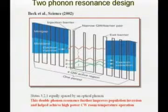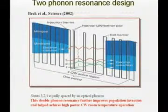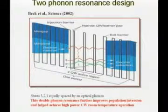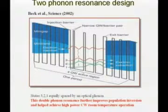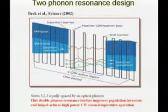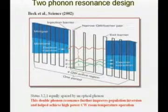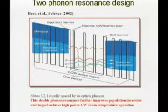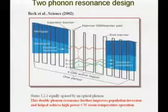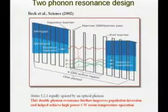If you want to really improve your population inversion and go to continuous wave operation at room temperature, you have to do something better. This was demonstrated a few years ago: a two-phonon resonance design to get even lower population in the final state. This led to CW operation at room temperature.